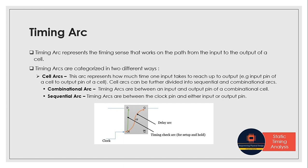Timing arc basically means the timing sense on the timing path from each input to each output of the cell or a flop. Basically it represents how much time an input takes to reach the output.